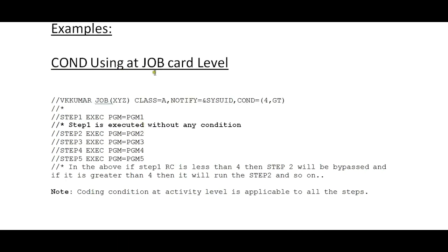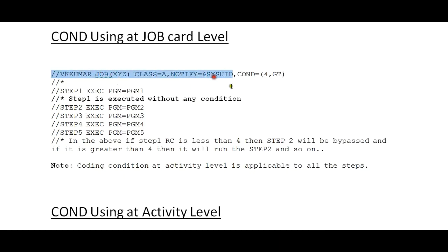The first example is COND used at the job card level. In this job card, I'm using COND equal to 4 with the greater than symbol. There are four steps. By default, step one will be executed — it won't look for any condition. Based on the return code received from step one, the next action will be taken. If step one's return code is less than 4, then step two will be bypassed. If it is greater than 4, then step two will run, and the same condition applies to step three, step four, and step five.